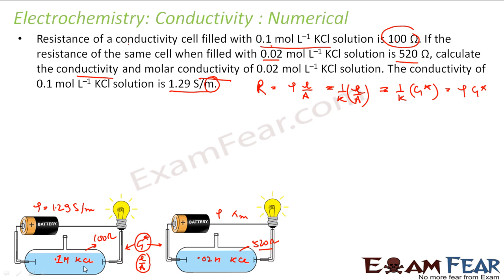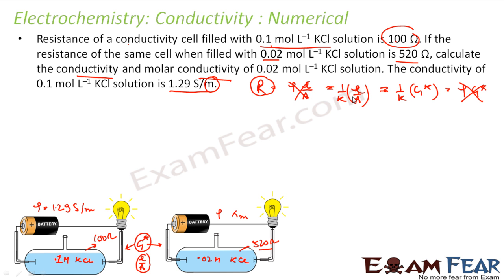In this case, resistance is given as 100 ohms and conductivity K is also given as 1.29 S/m. So since K is given, the formula to use is R equals 1 by K times G-star, to find the cell constant G-star.